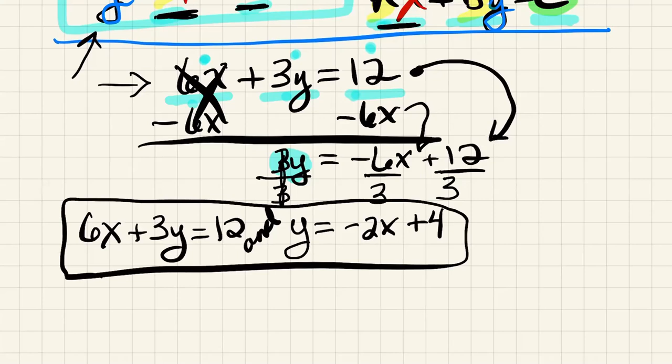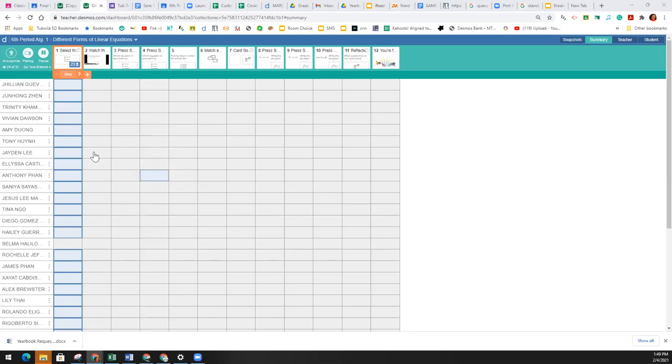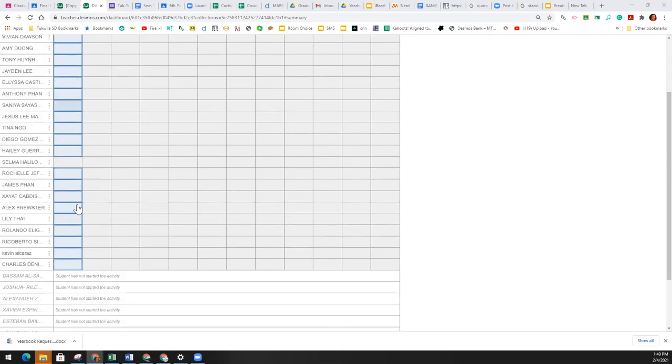We are going to move from that into working on a Desmos. I left the link for you in Google Classroom. It's titled Different Forms of Linear Equations. I'm going to switch my screen over so we can take a look at the activity before I have you all start on it.